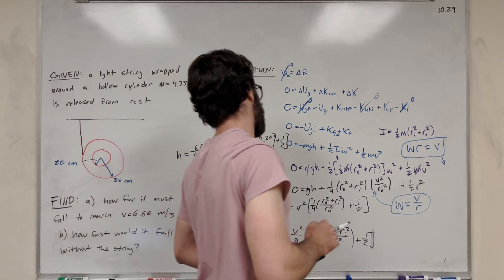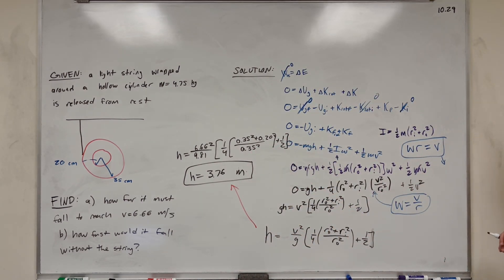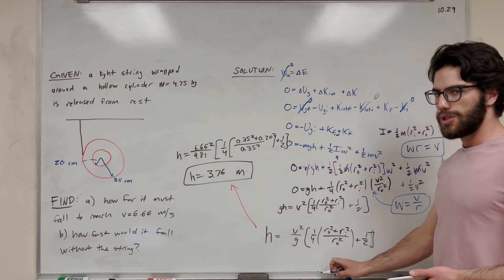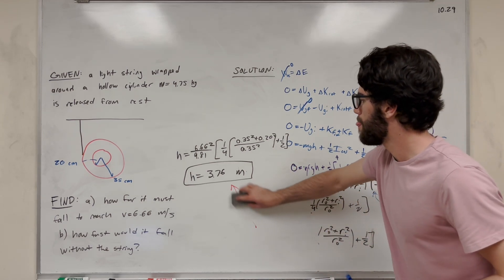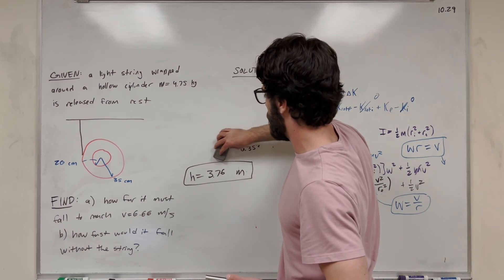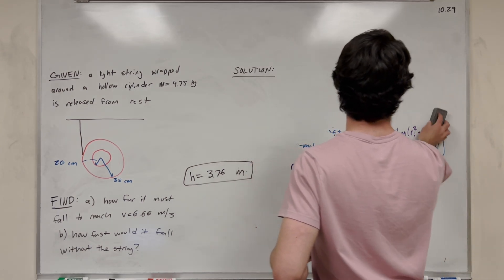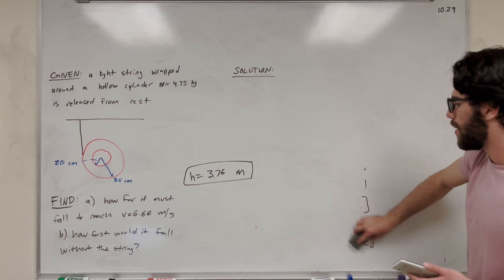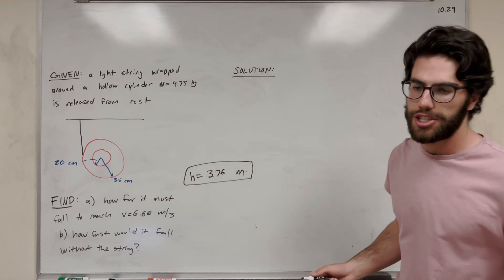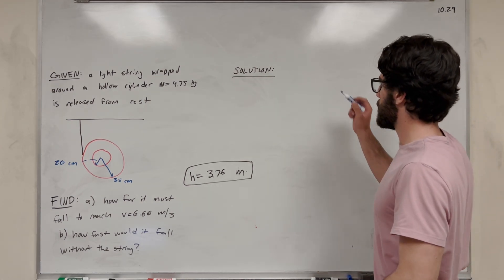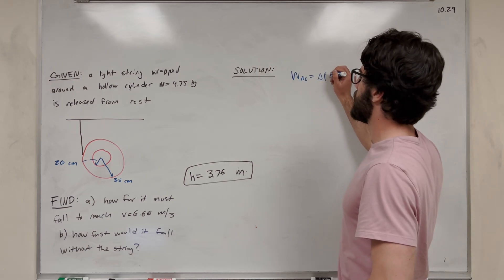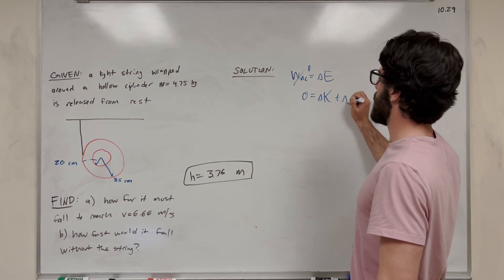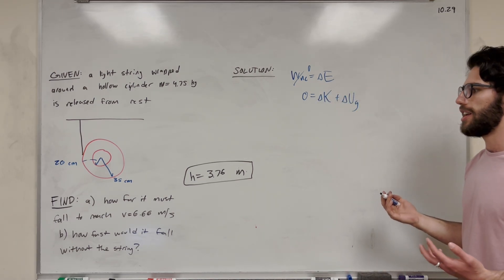Now for part B, we look at what would happen if the cylinder wasn't attached to the string and just fell straight down — how fast would it be moving after falling 3.76 meters? If it's not attached to the string, the object isn't going to rotate. So we start over with work non-conservative equal to zero, and now we only have change in kinetic energy plus change in gravitational potential energy — no rotational energy this time.